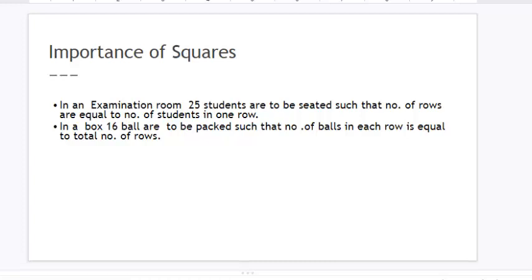Okay, so you must have gone to the examination room. So imagine there is an examination room and 25 students have to be seated in such a way that number of rows is equal to number of students in one row. So how will you make the arrangement? Think about it.